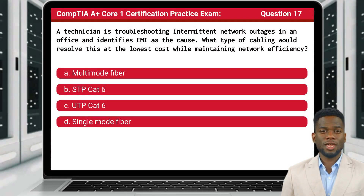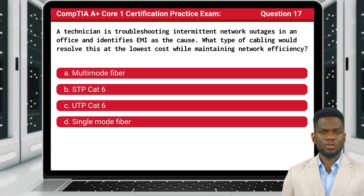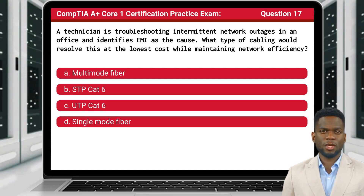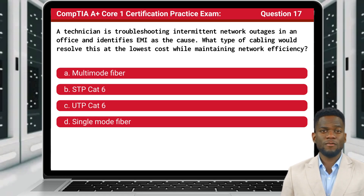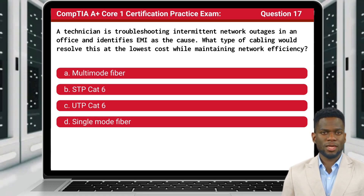Question 17. A technician is troubleshooting intermittent network outages in an office and identifies EMI as the cause. What type of cabling would resolve this at the lowest cost while maintaining network efficiency?